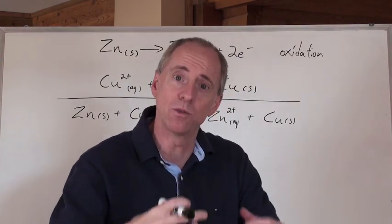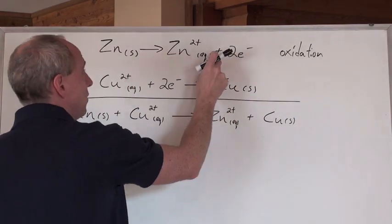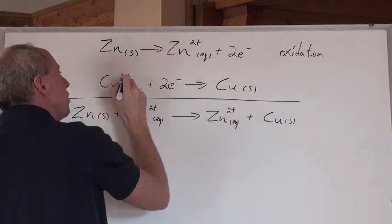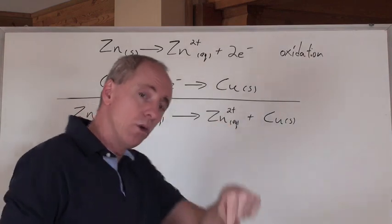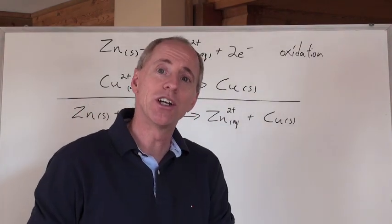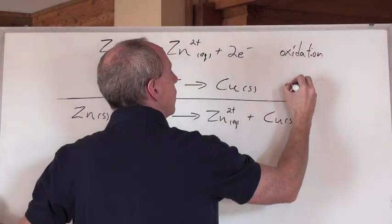And some copper ions will take those electrons from the zinc, who will then lose them. And because the charge of the copper is going from two positive to zero, it's going lower. When the charge goes lower, we call that reduction.